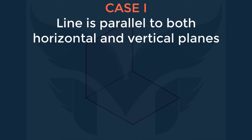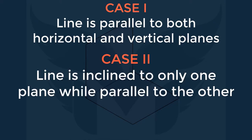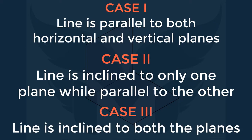Case number one: line is parallel to both horizontal and vertical plane. Case number two: line is inclined to only one plane while parallel to the other. And case number three: line is inclined to both the planes. And here for every case, we will see few examples.